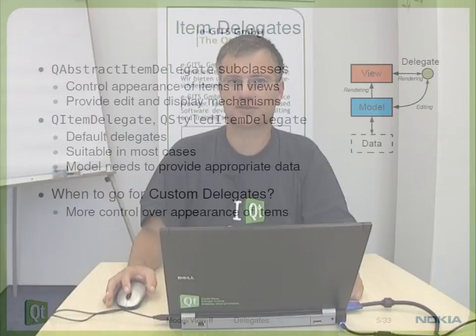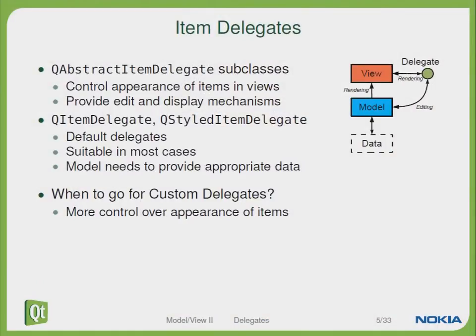Talking about delegates — what does a delegate do in model view architecture? The delegate is responsible for rendering and editing item information. Whenever you would like to implement your own delegate you have to subclass from QAbstractItemDelegate, and then you can control the appearance of the item within your views and also provide editing and display mechanisms.